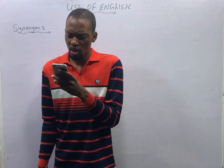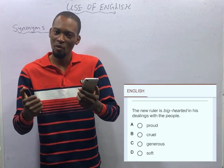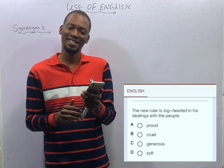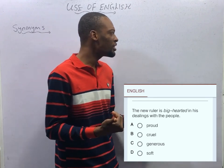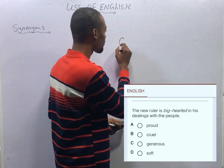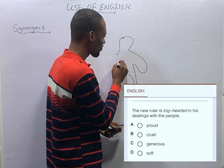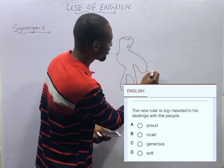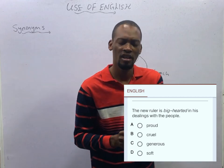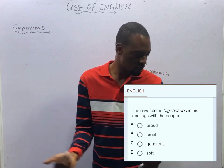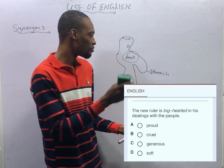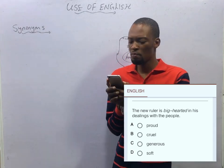'The new ruler is big-hearted in his dealings with the people.' Options: proud, cruel, generous, soft. To be big-hearted doesn't mean you have a big heart physically. When someone is big-hearted, it refers to the person being kind or generous. If you are a kind or generous person, we say the person is big-hearted. So big-hearted means kind and generous — option C is correct.